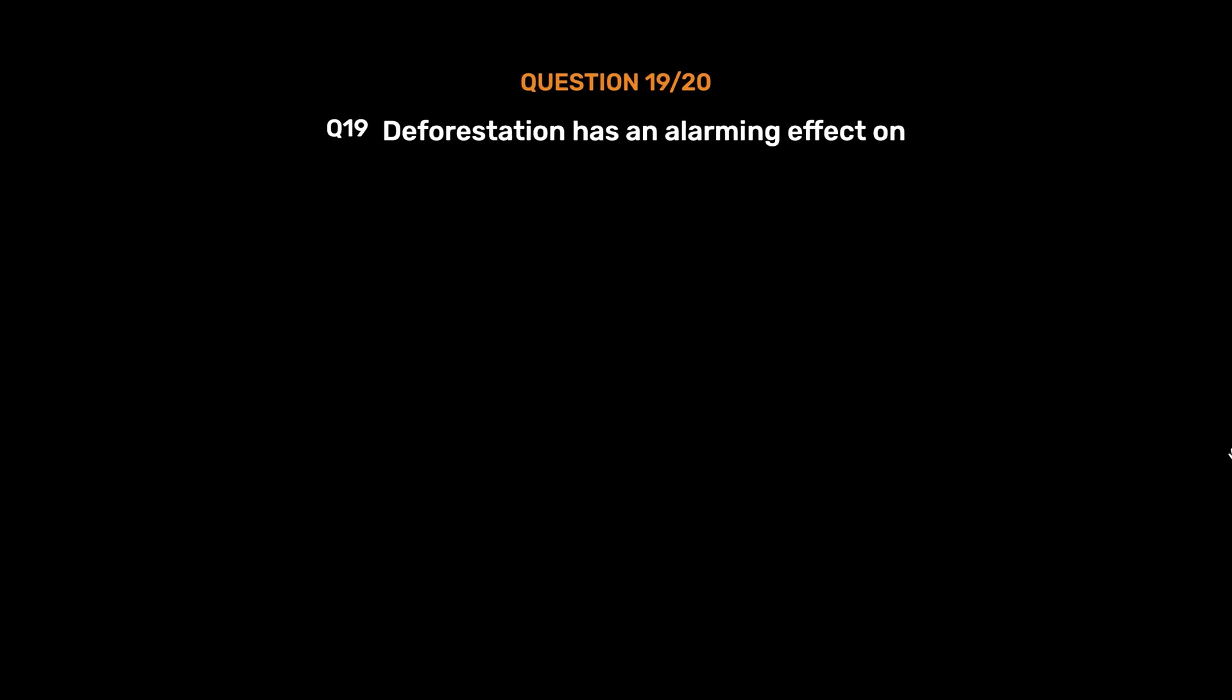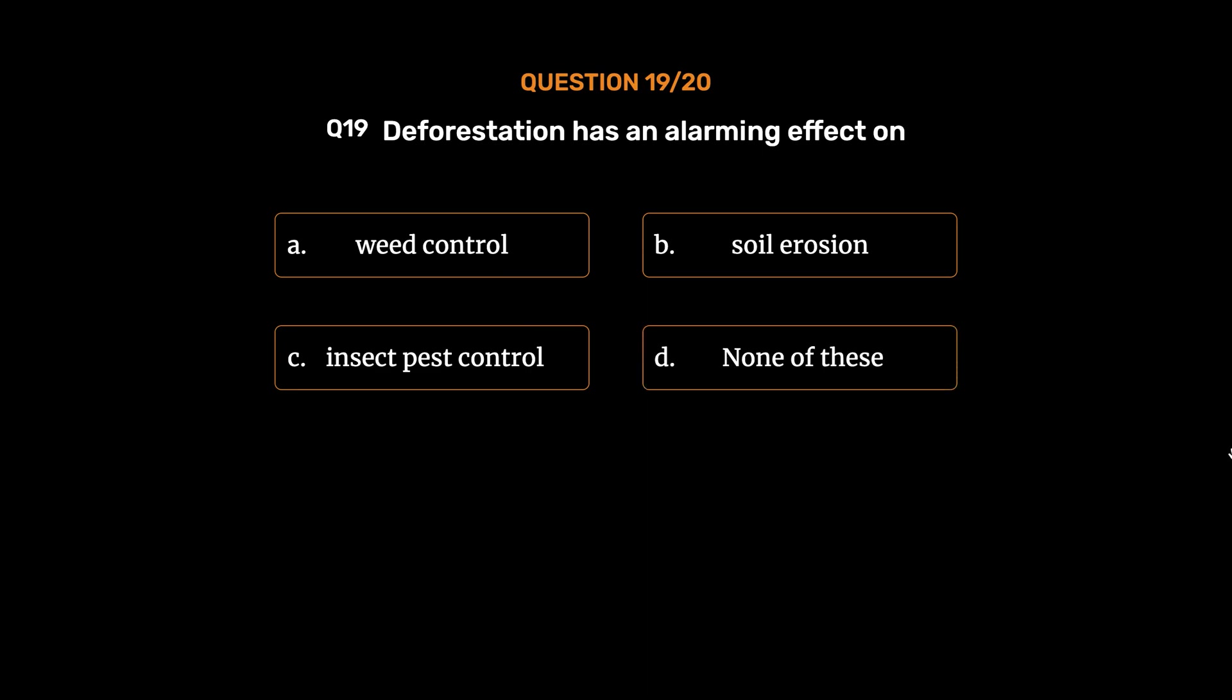Question number 19. Deforestation has an alarming effect on: option A, Weed control; option B, Soil erosion; option C, Insect pest control; option D, None of these. The correct answer is option B, Soil erosion.